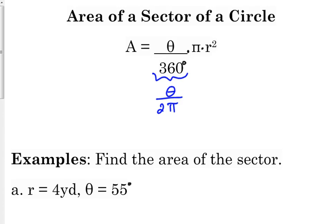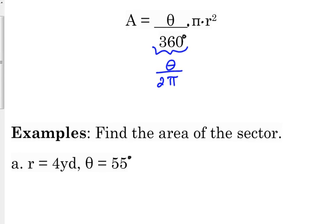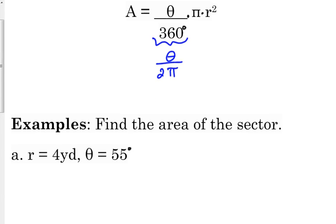Let's do a few examples. If our radius is 4 yards and our angle is 55 degrees. Now, there's nothing special about the order of this equation. I explained it by finding the area first and then multiplying it by the ratio. It doesn't matter. Order of multiplication does not matter.